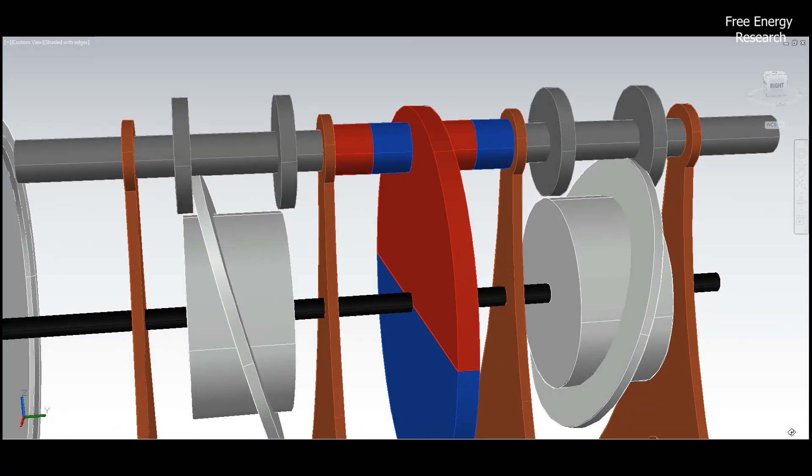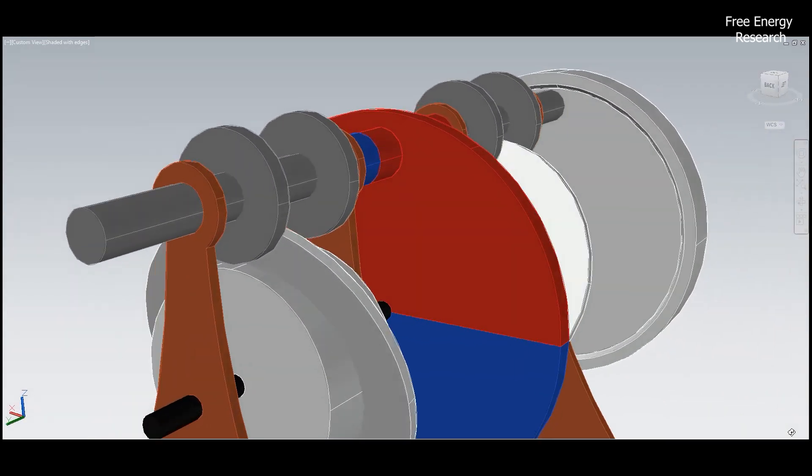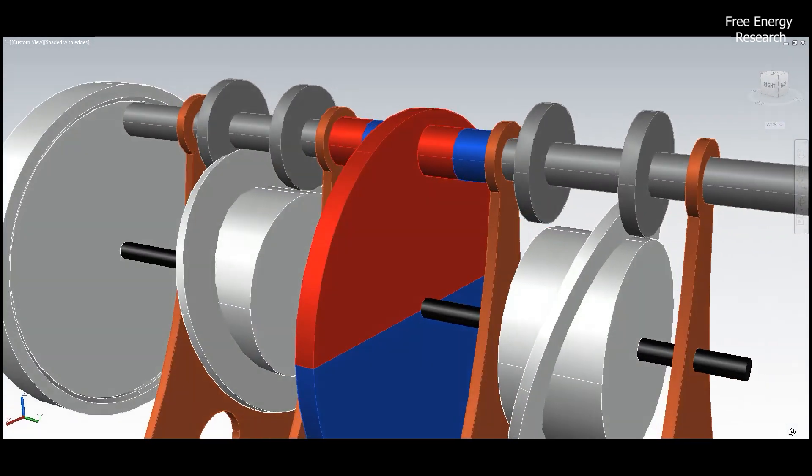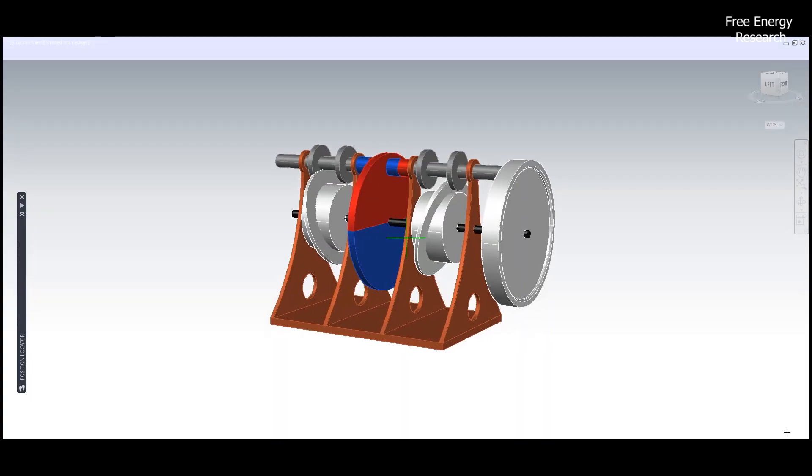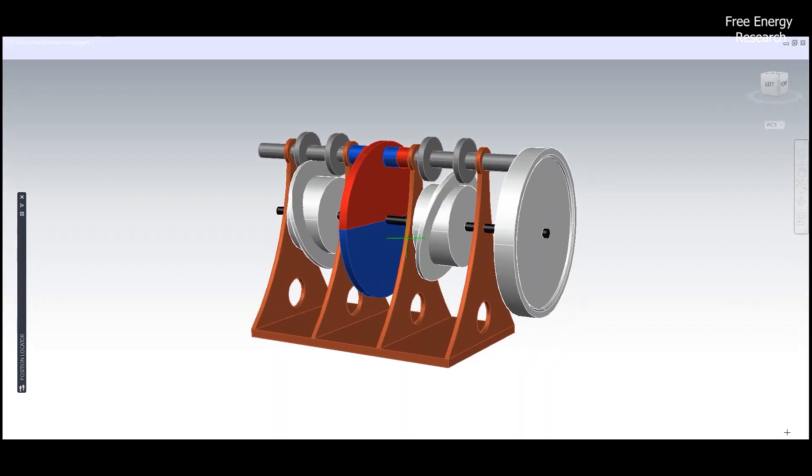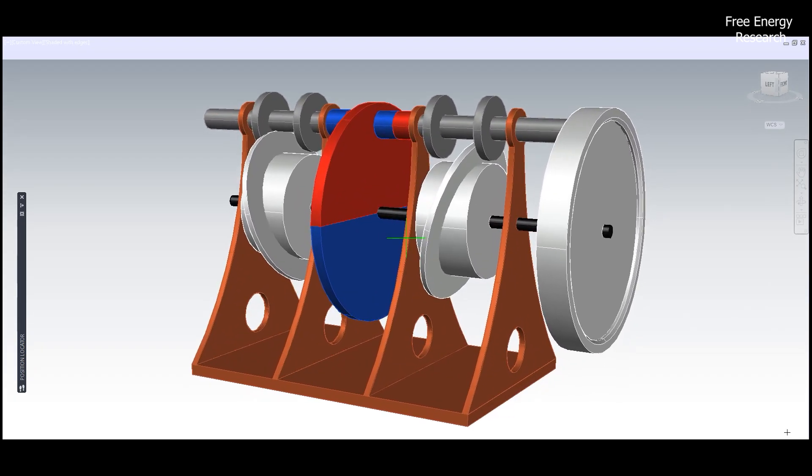Now, the real magic happens when the reciprocating motion is skillfully transformed into rotary motion by the cam drives, positioned concentrically to the magnet and piston pairs. The result? Both reciprocating and rotary motion as usable power output, a testament to the versatility of the magnet engine.